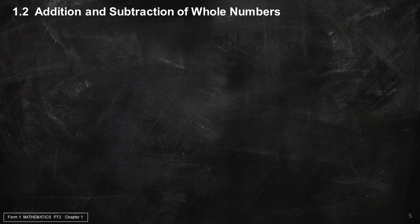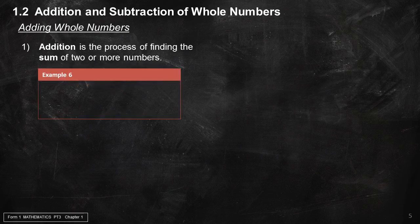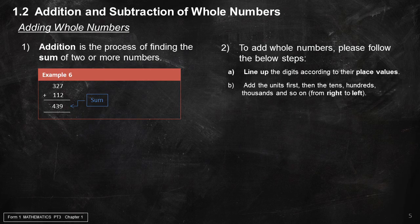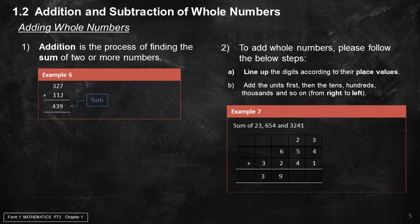Section 1.2: Addition and Subtraction of Whole Numbers. Adding whole numbers: addition is the process of finding the sum of two or more numbers. Example 6: 327 + 112 = 439. To add whole numbers, follow these steps: A) Line up the digits according to their place values. B) Add the units first, then the tens, hundreds, thousands, and so on, from right to left. Example 7: the sum of 23, 654, and 3,241 is 3,918.